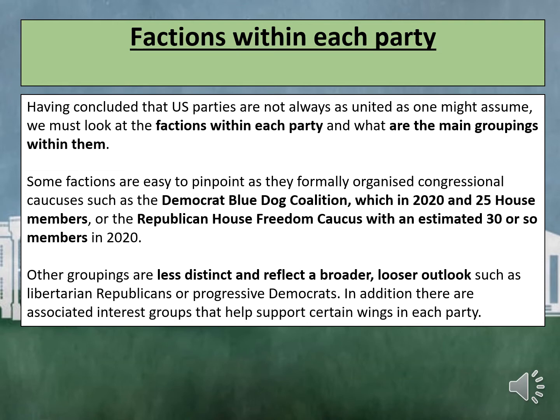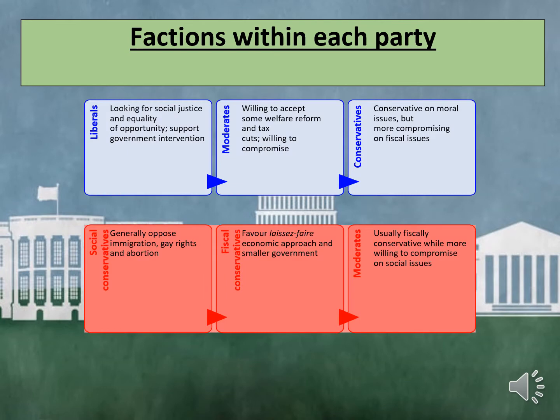In addition, there are associated interest groups that help support certain wings in each party. For example, if we look at the factions within each party, we can see that within the Democrats we have Liberals, Moderates, and Conservatives.